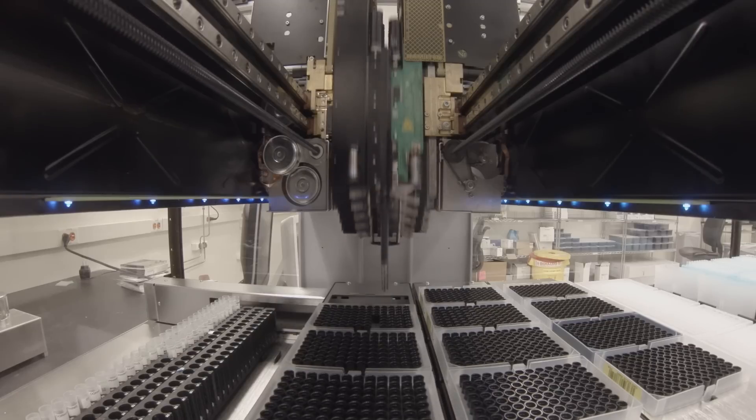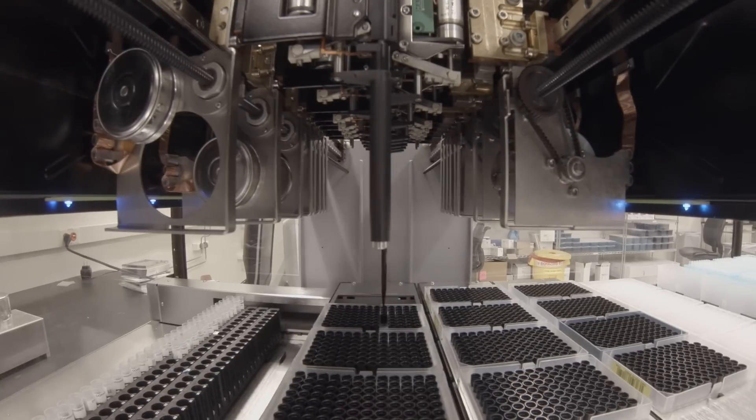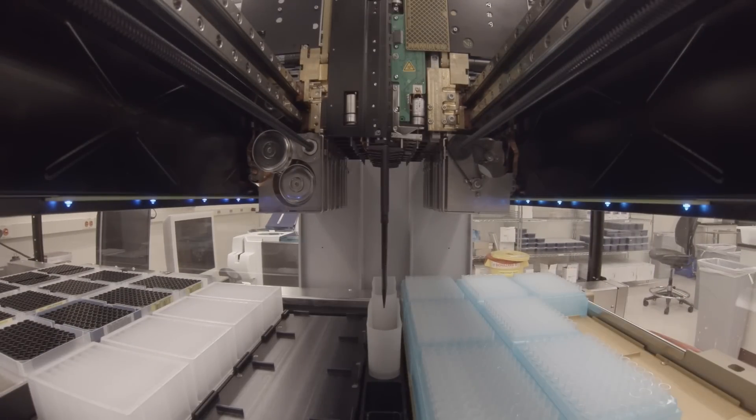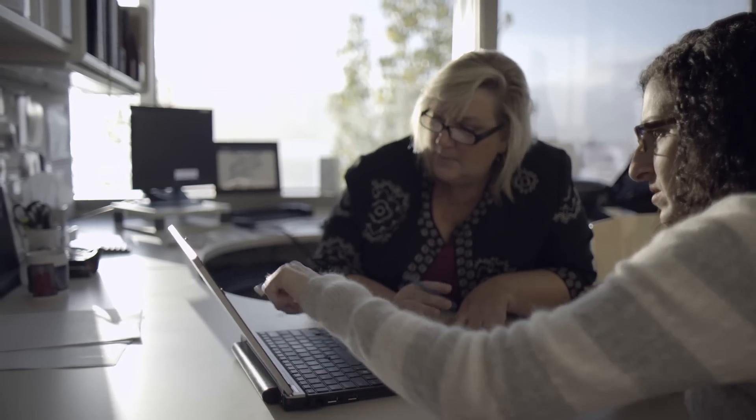We run plate-based assays where you coat down an antibody that will pull down the antibody of interest, and then we add yet another antibody, so you create this sandwich. And then you have a color detection and you read that in an instrument. That instrument takes that data and we crunch that data so that we're able to describe a concentration.